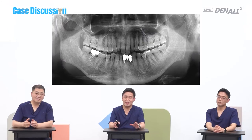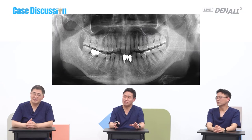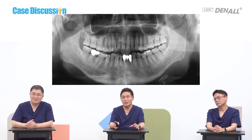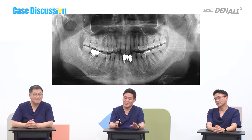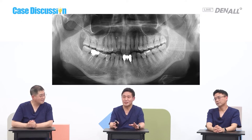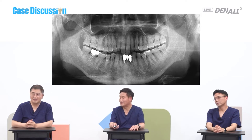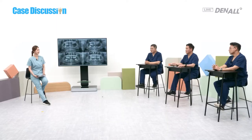Looking at the case under discussion — is it right to keep number 41? If it were me, I would extract that. Extracting number 42 would be good, but at least I need to extract number 41. In the three missing teeth area, two implants need to be placed.